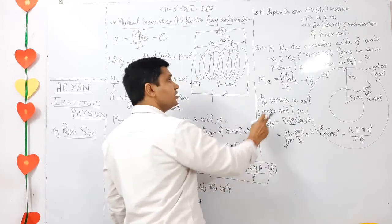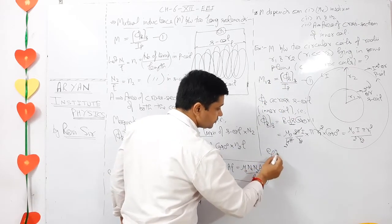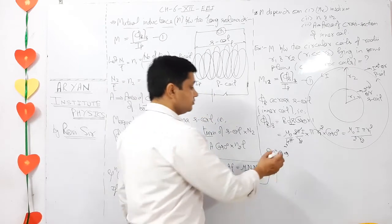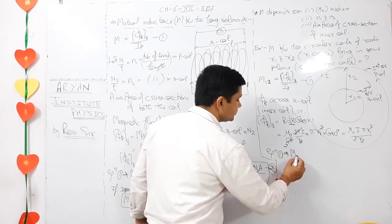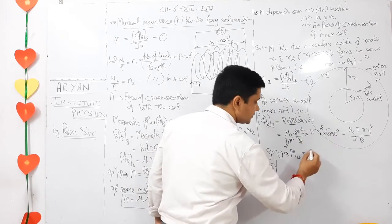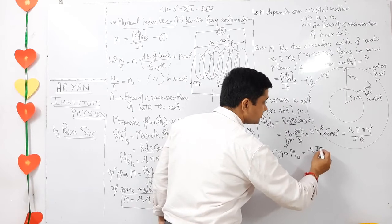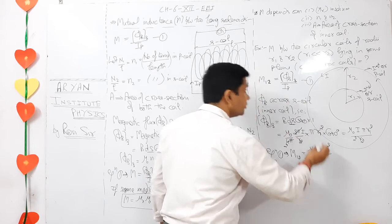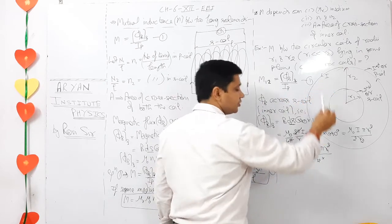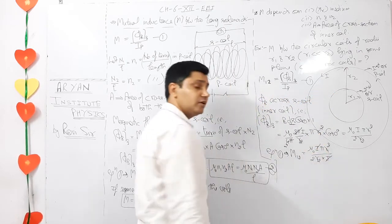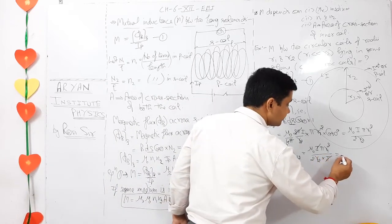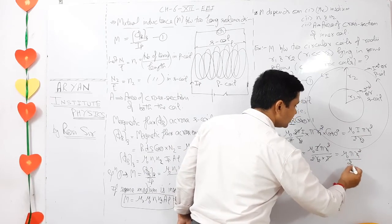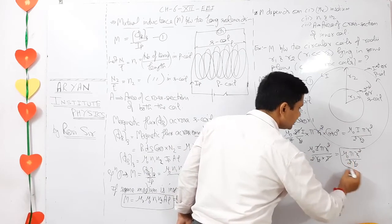Putting the value of magnetic flux into the mutual inductance formula: M = Φ / I = (μ₀ I π R1² / 2R2) / I. The current I cancels. The mutual inductance between two concentric circular coils is M = μ₀ π R1² / 2R2.